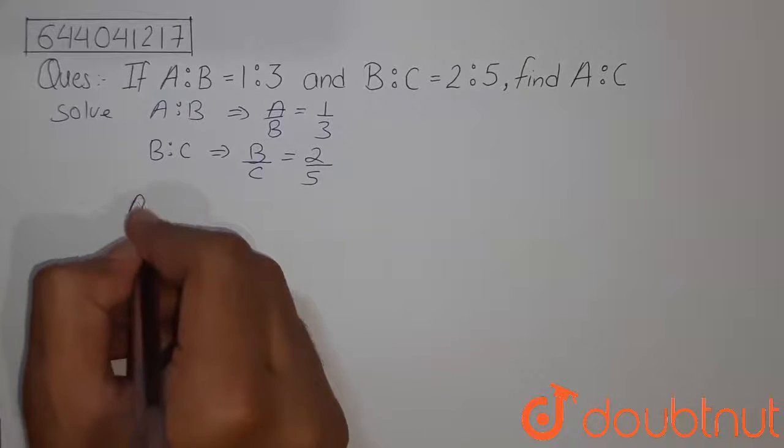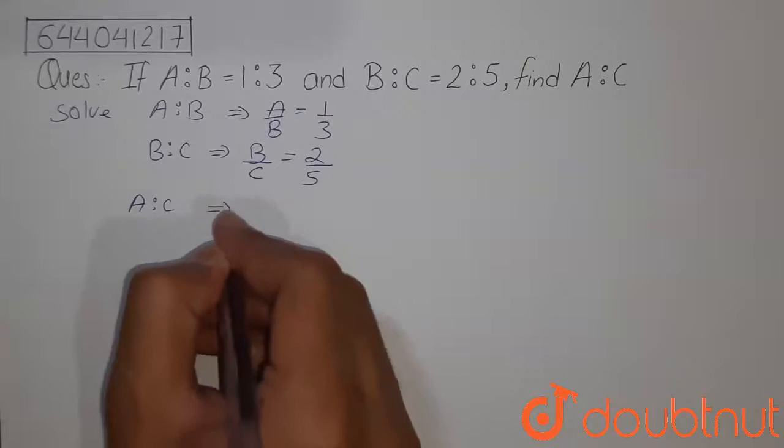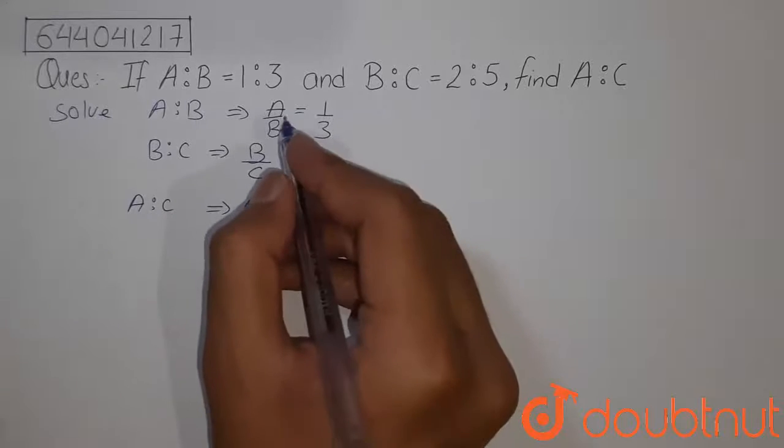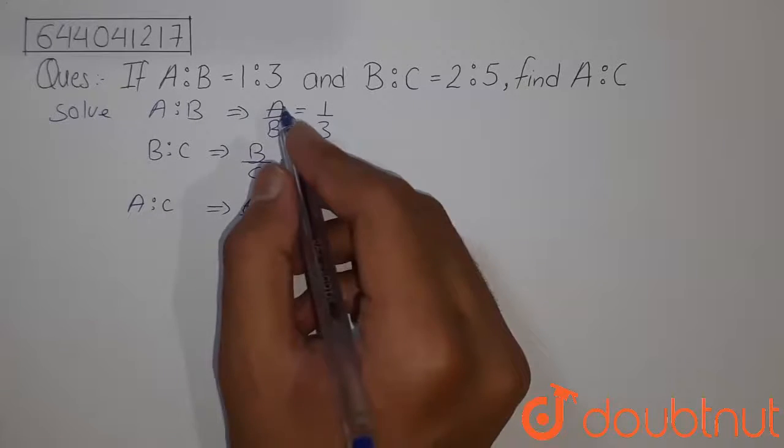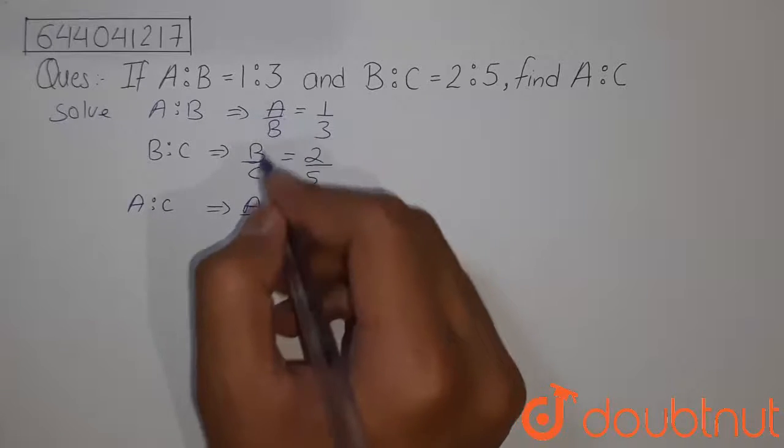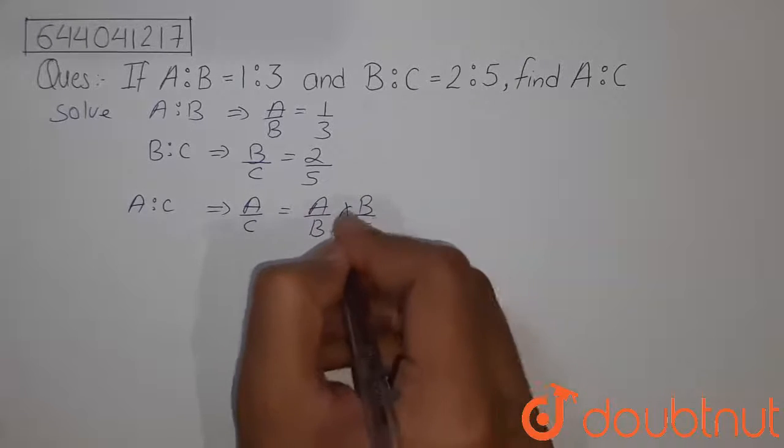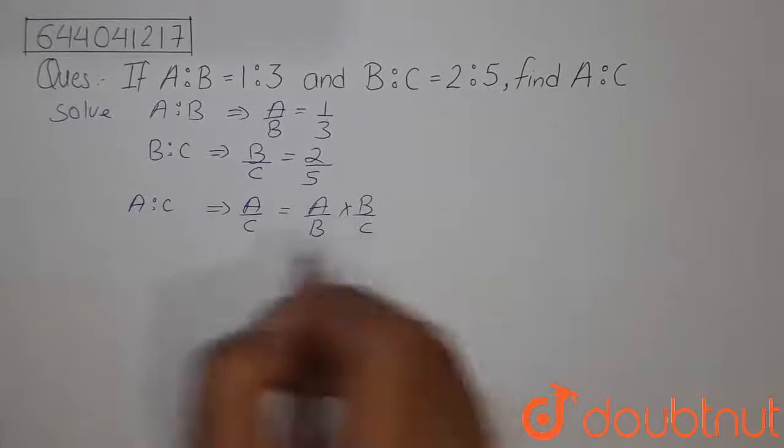Now, we have to find the value of A ratio C, that is A by C. You can note one thing that whenever we multiply these both equations, we get the value A by C. That is A by B into B by C. This B and B will cancel out giving A by C.